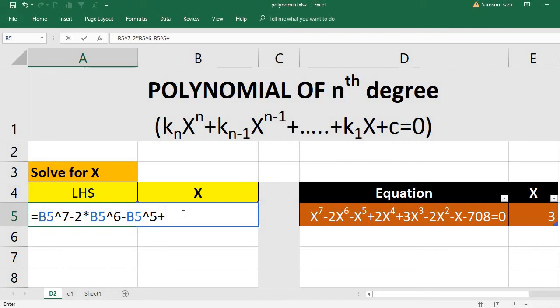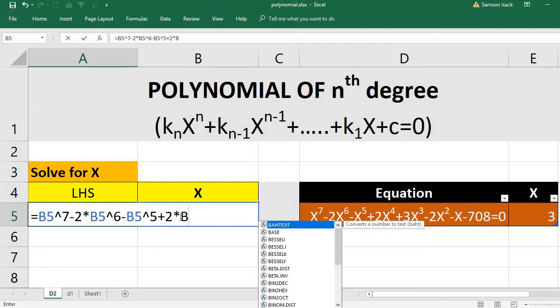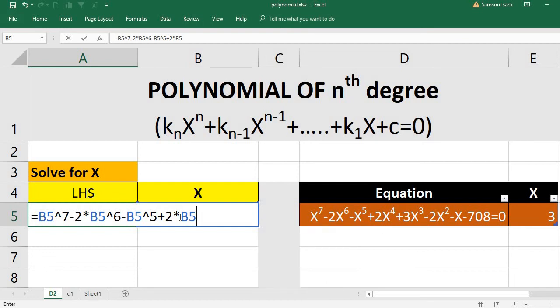Plus 2 into x power 4, 2 into x power 4, which is B5 power 4.